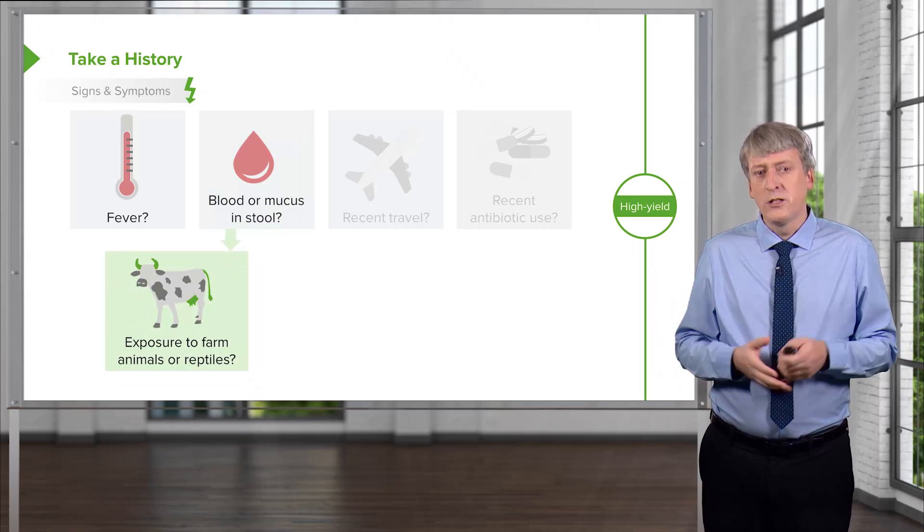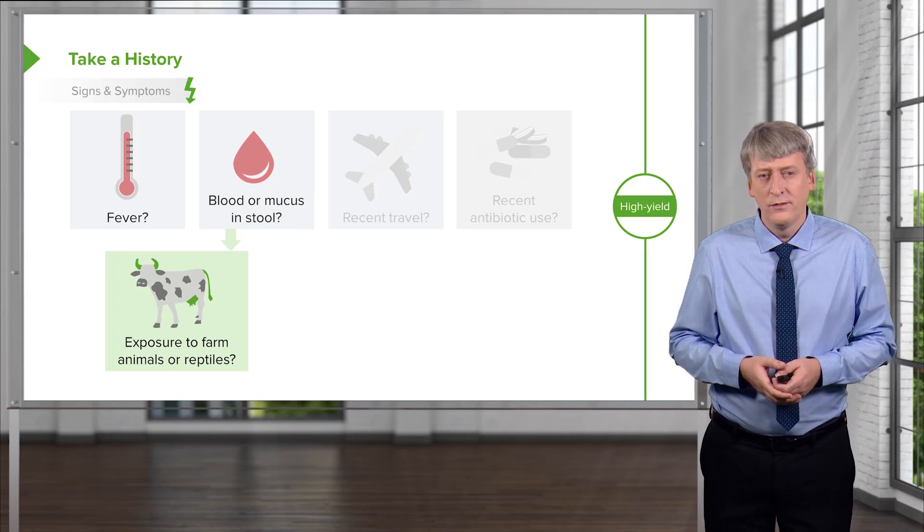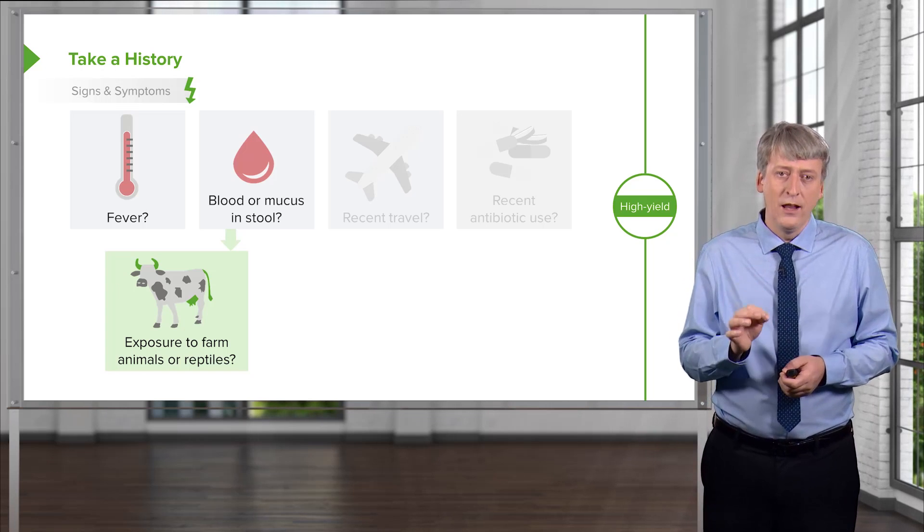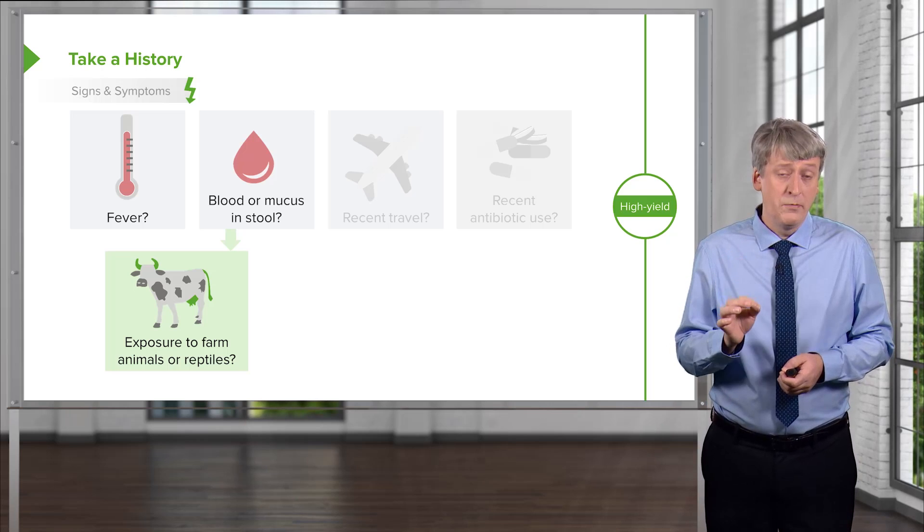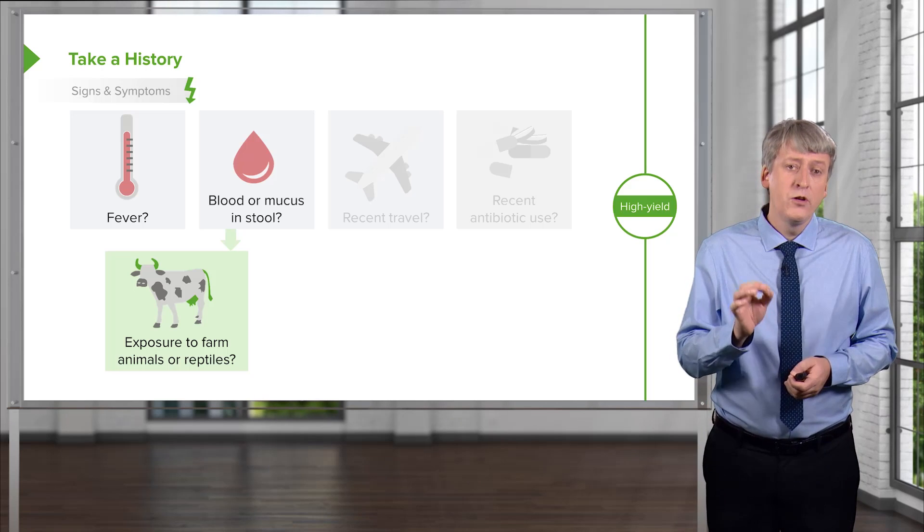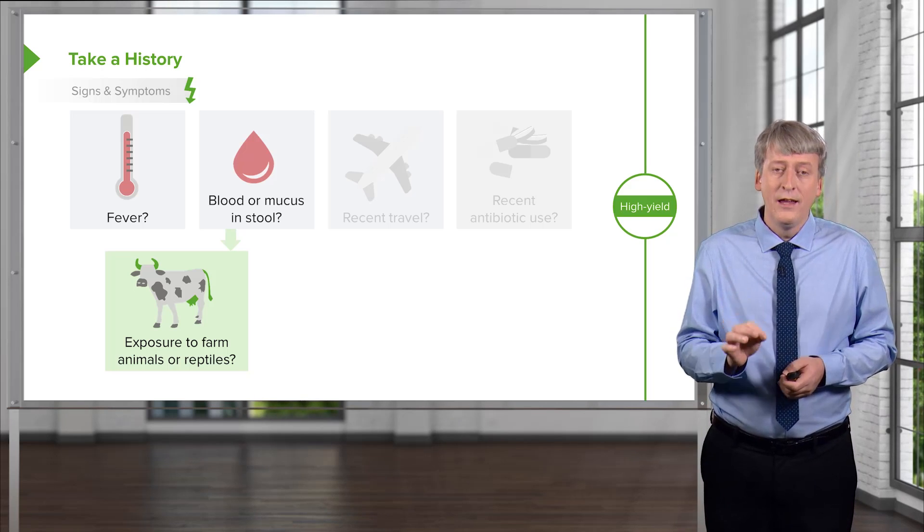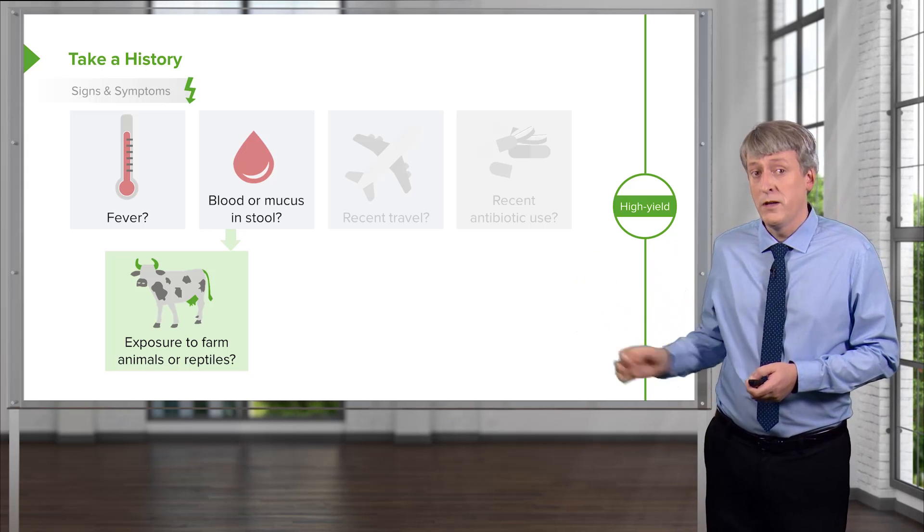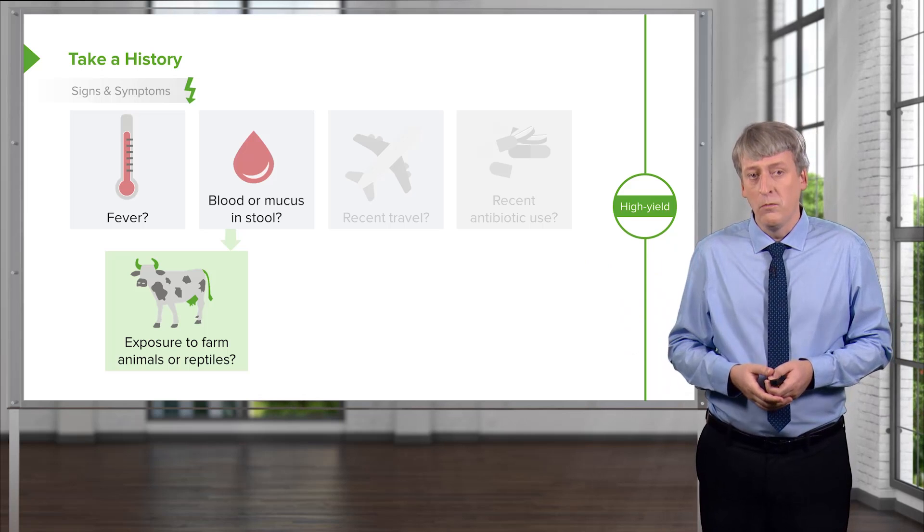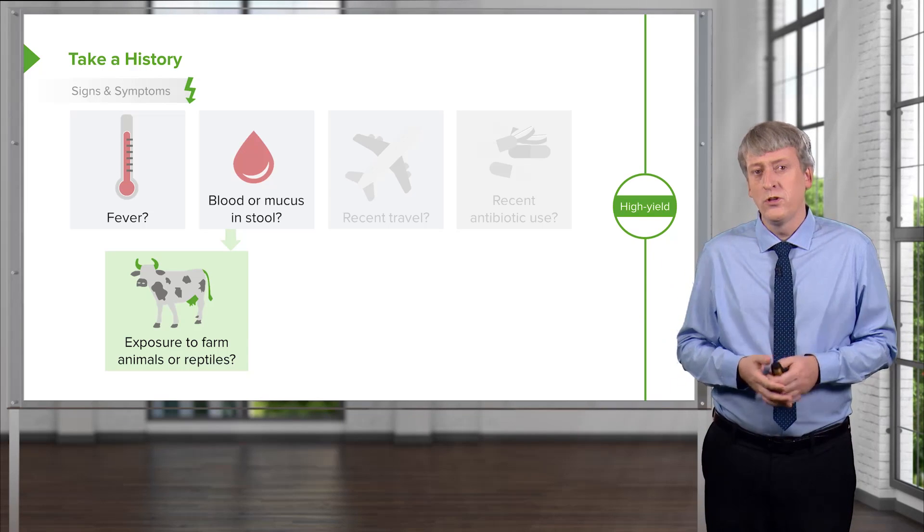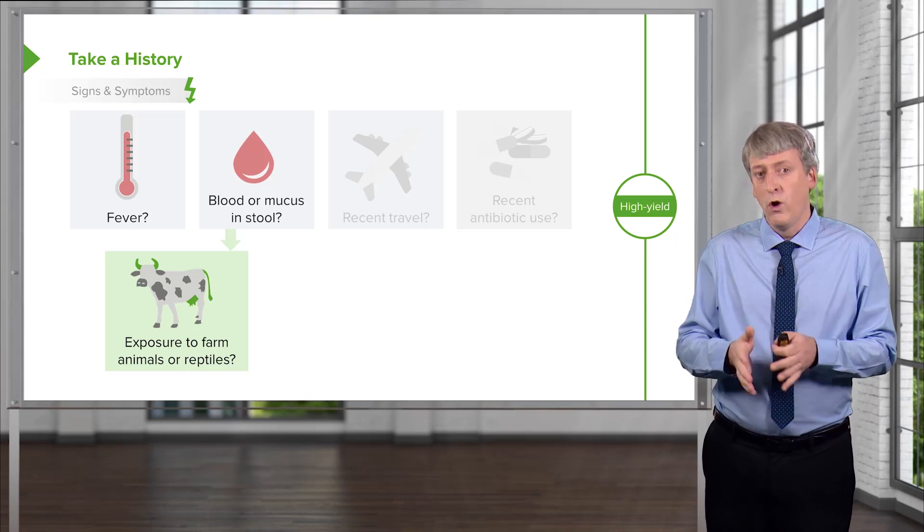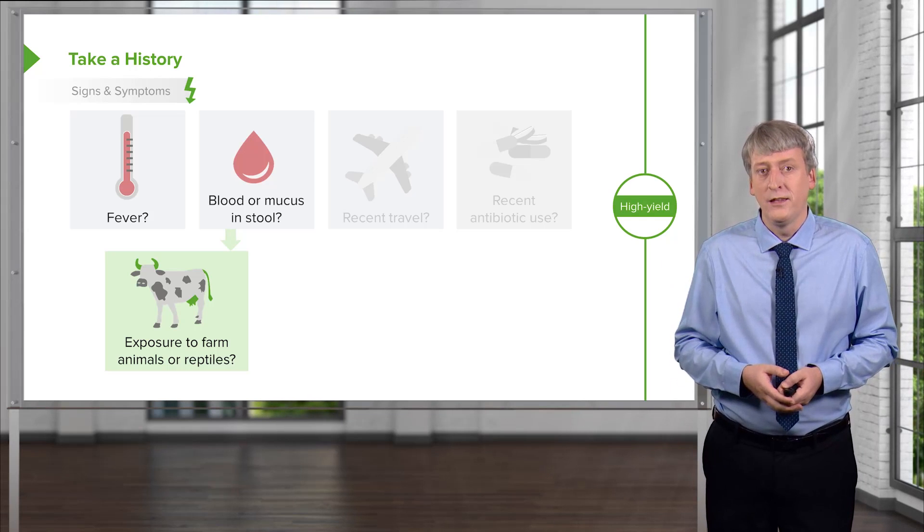Ask about exposure to farm animals or reptiles. This is actually a really important question because a common cause of salmonella in children is reptile pets and a common cause of E. coli, especially the variety that causes hemolytic uremic syndrome, is from farm animal exposure. Petting zoos are a big problem in the United States if children don't wash their hands with alcohol after they pet the animals.